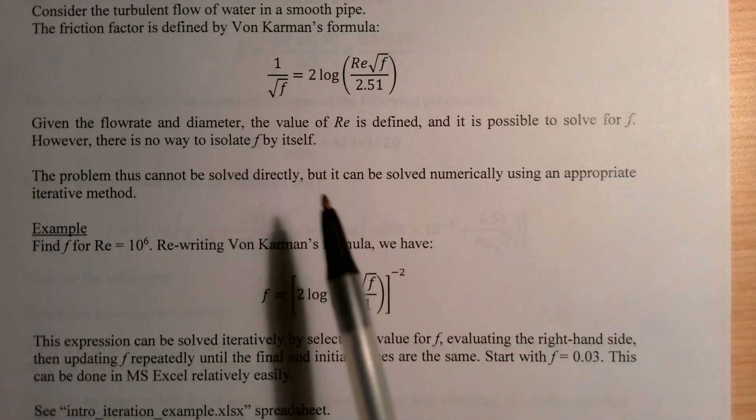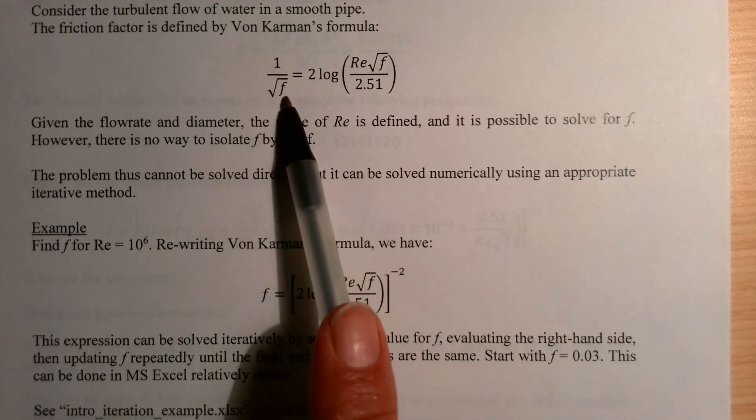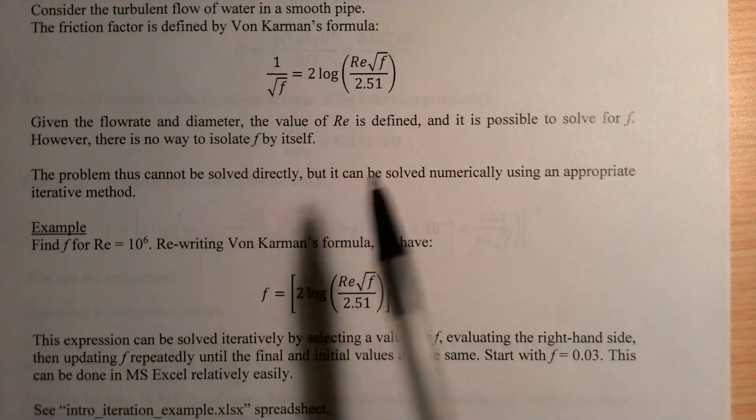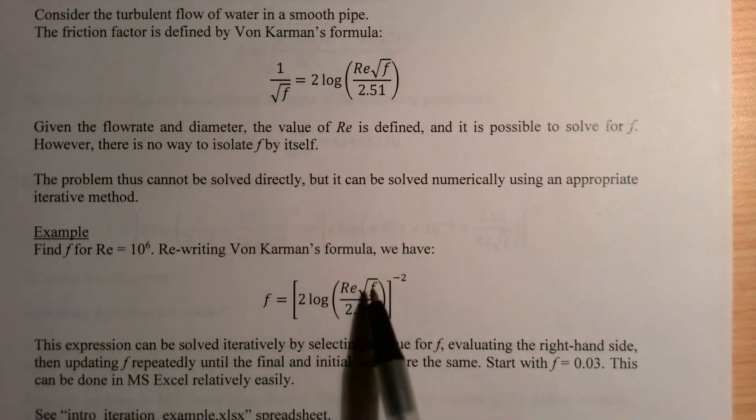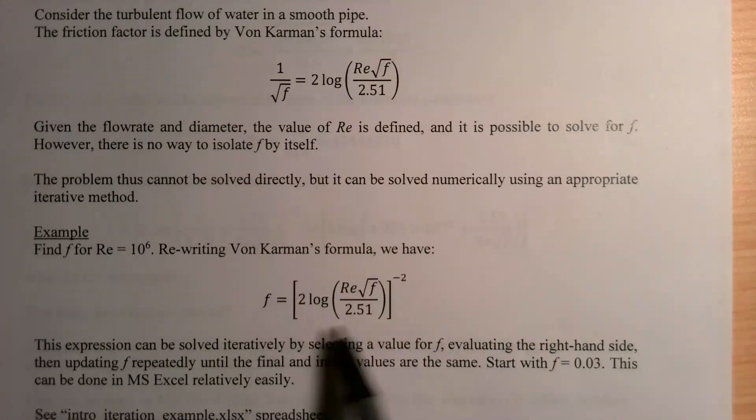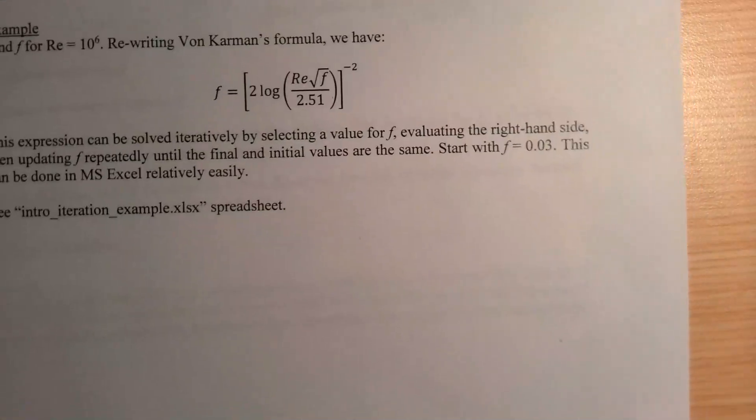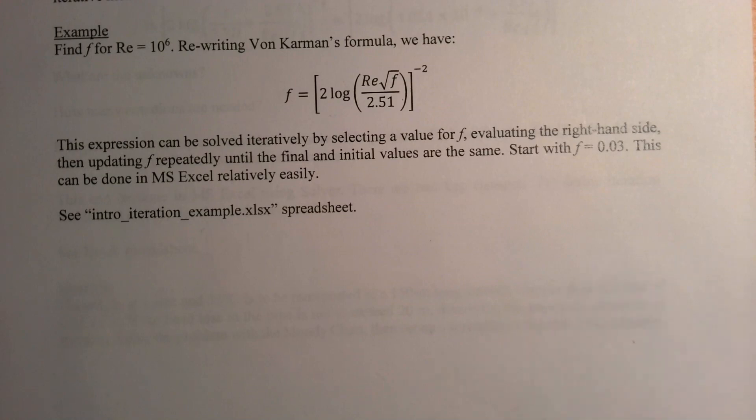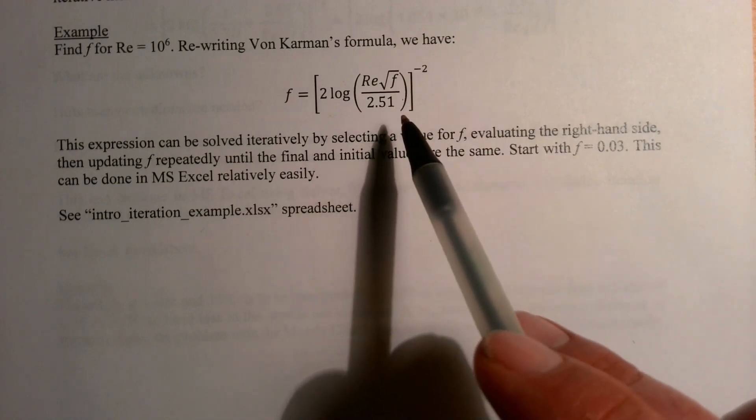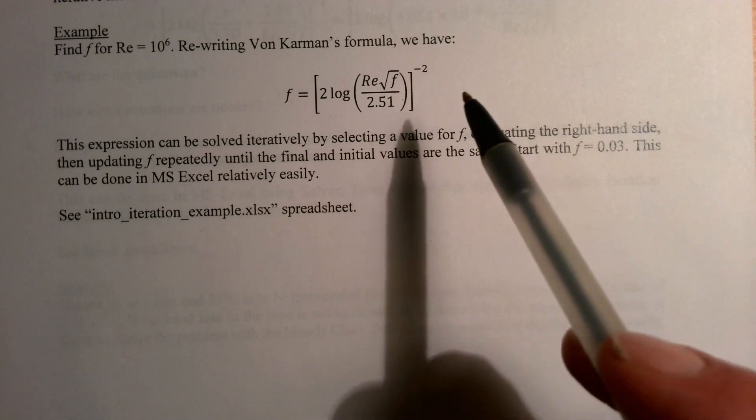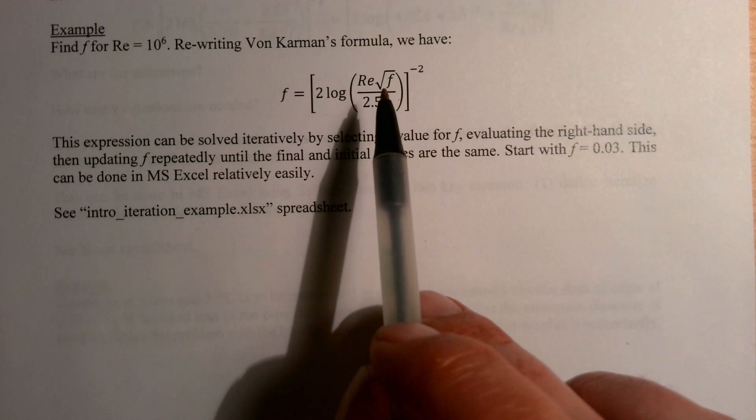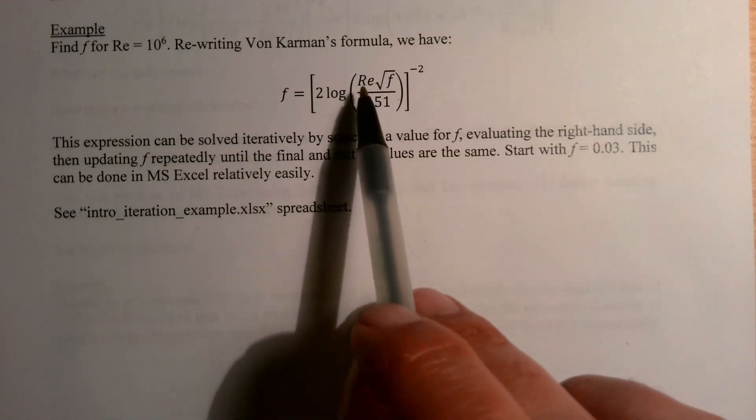Here we're asked to find the value of f using Von Karman's formula. I've taken the liberty here of rewriting the formula into the form shown there—this is f to the minus one-half power. If I do both sides to the negative two power, then this becomes f, and then on this side here I get this whole expression to the negative two power. This kind of gives us a handy approach to use an algorithm to solve for the value of f.